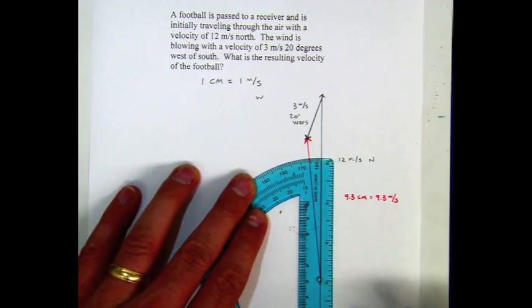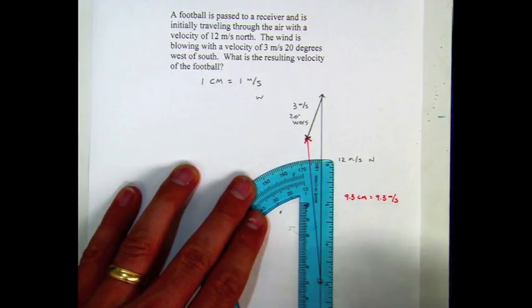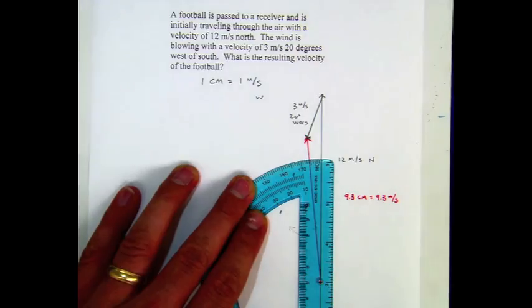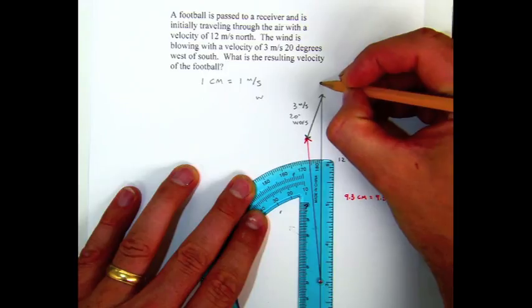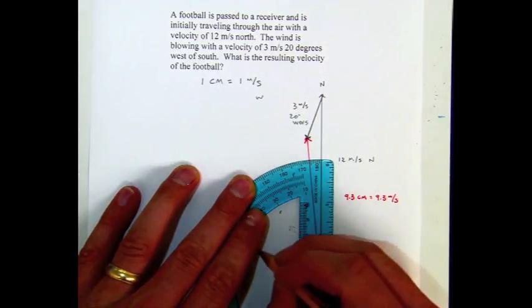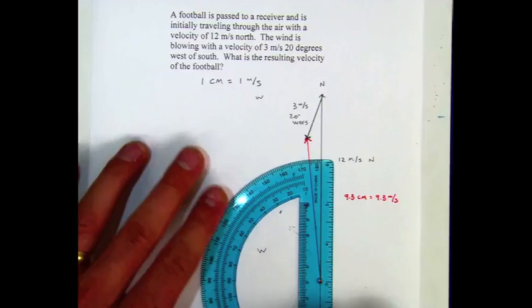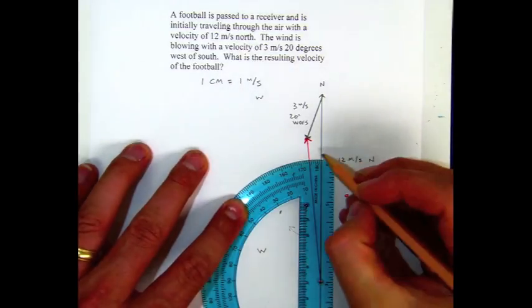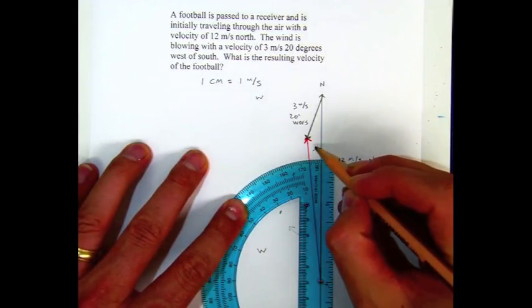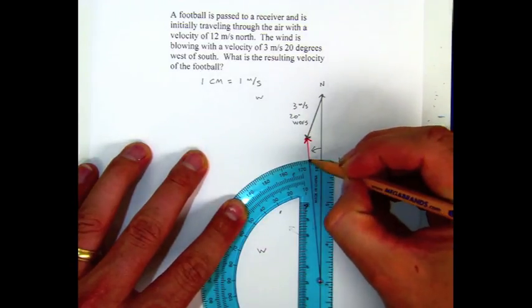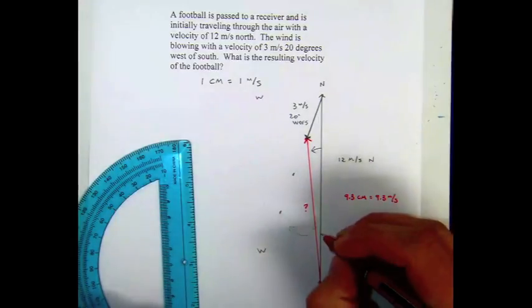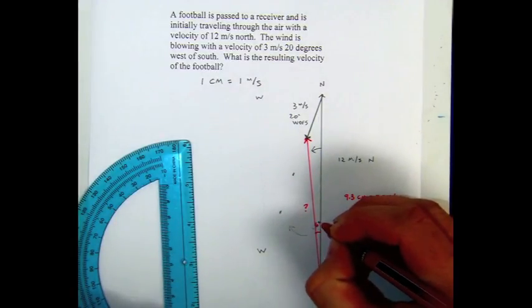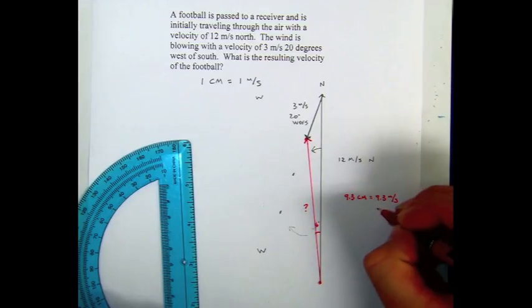Now we need to find the angle. Every vector needs a magnitude and a direction. We use an angle to describe the direction. So if this is north, which it has been in this problem, and that's west, we can describe this angle. If we put 0 at north, that angle is going to be 6 degrees west of north. So if I label my angle, it's going to be 6 degrees west of north.